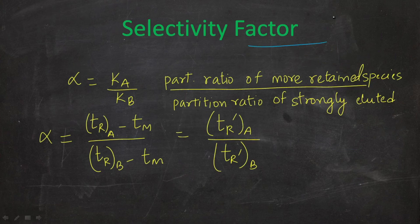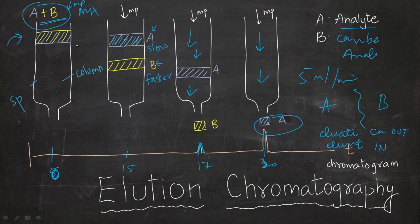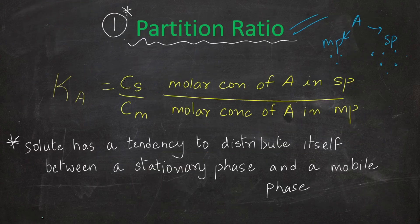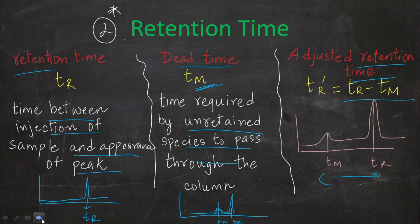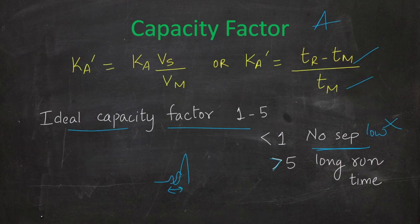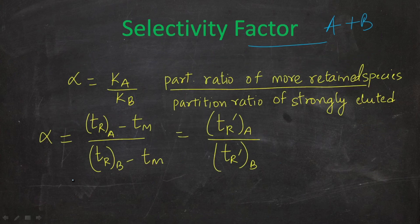The next term is selectivity factor. The selectivity factor is the ratio of the partition ratio of the more retained species divided by the partition ratio of the more strongly eluted species. As seen in the first slide, B is more eluted and A is strongly retained. To measure how well the two separate, we use the selectivity factor alpha — which is also the ratio of the adjusted retention time of A to the adjusted retention time of B.